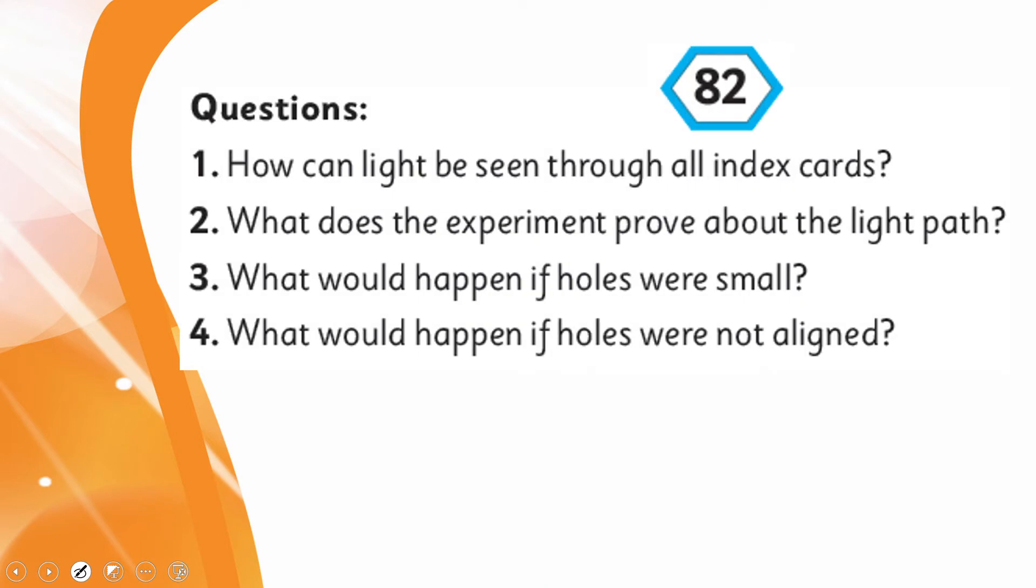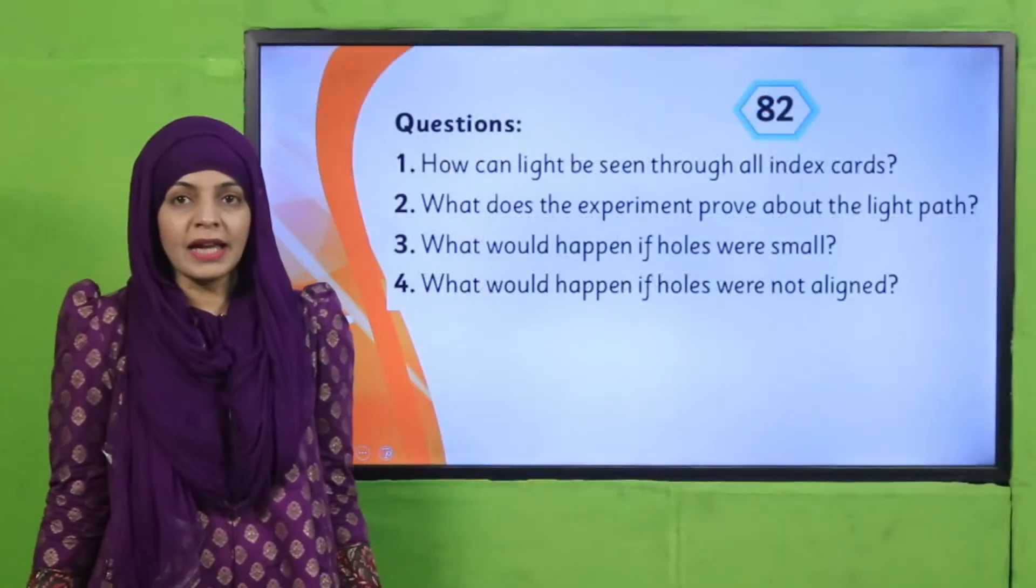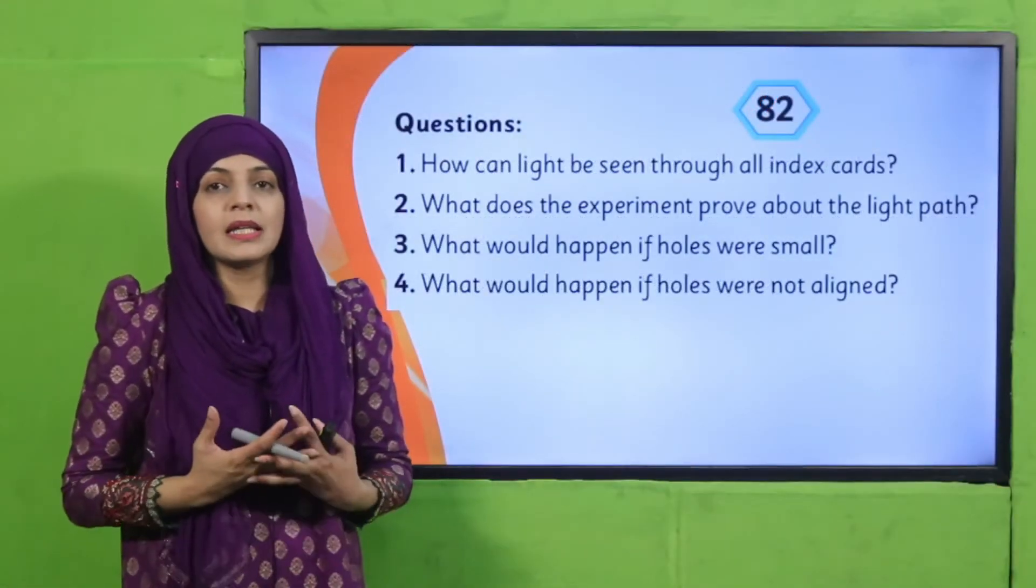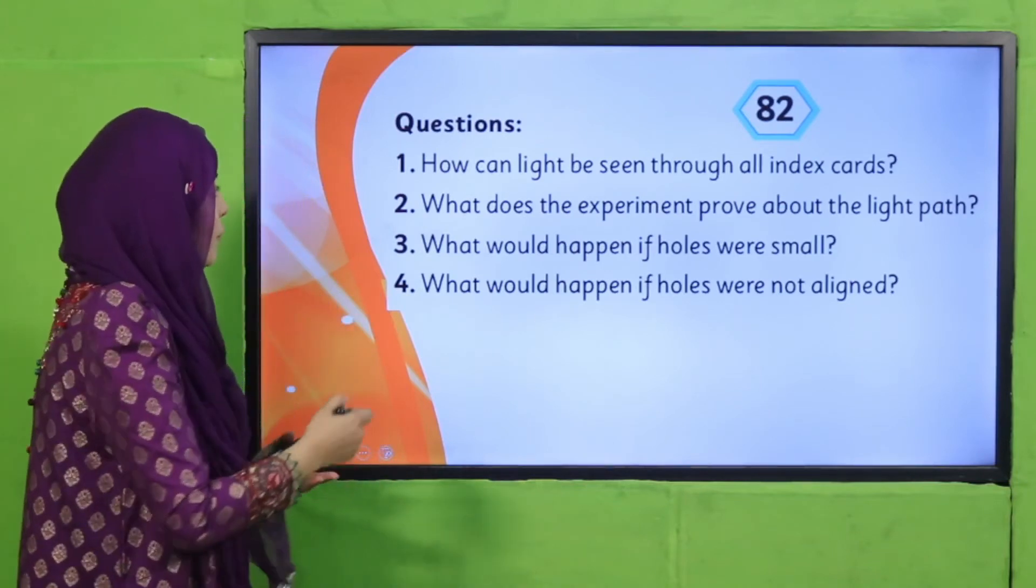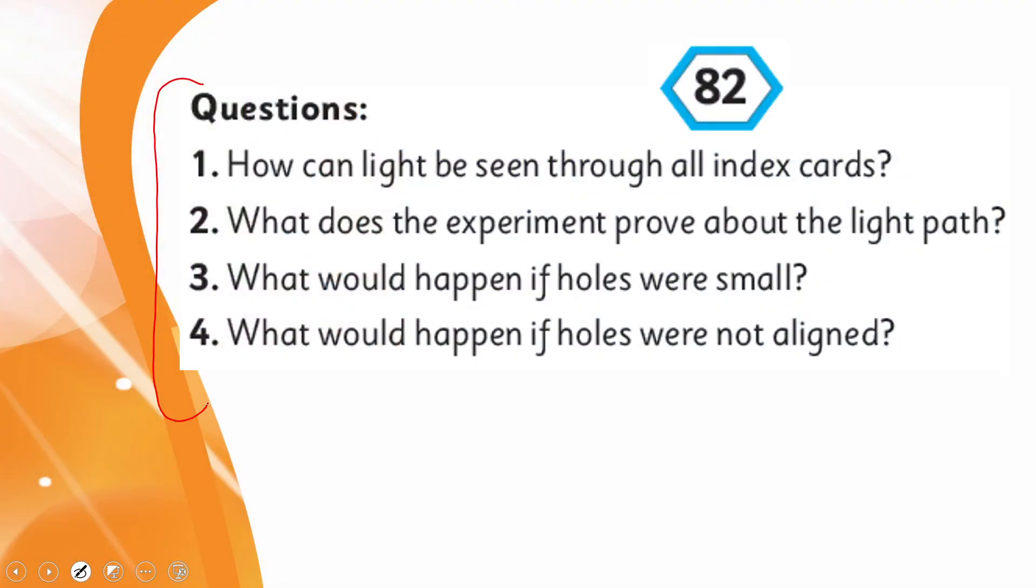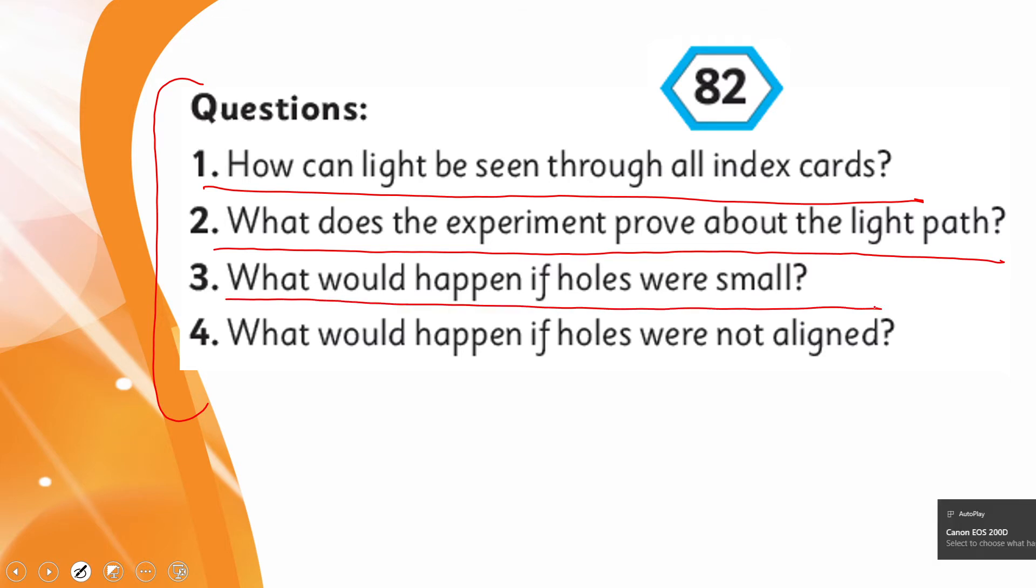Now I will switch off the lights and I will show you which way the light will travel. After that we will observe these questions: How can light be seen through all index cards? What does the experiment prove about the light path? What would happen if holes were small? What would happen if holes were not aligned? Now let's quickly arrange the material. I have arranged all the things.